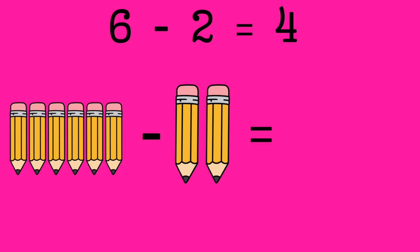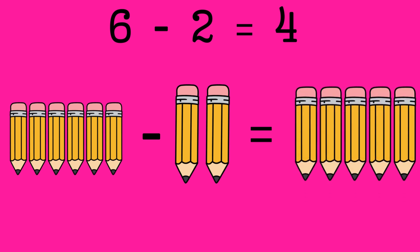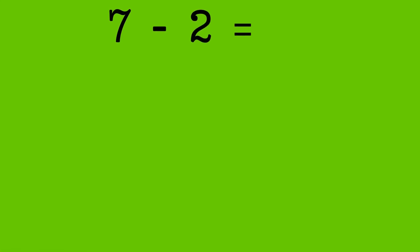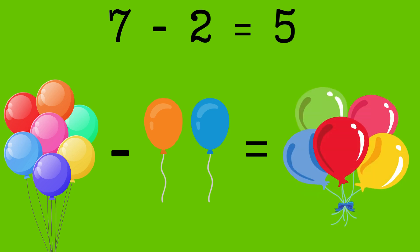How many pencils left? Correct, 4 pencils. 7 minus 2 equals 5. Let's say you have 7 balloons and 2 balloons flew away. How many balloons left? Correct, 5 balloons.